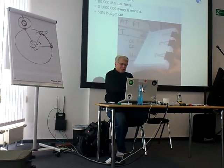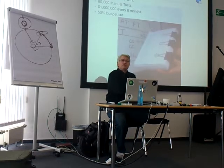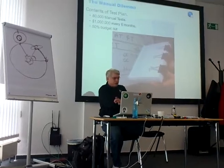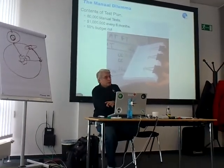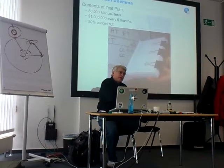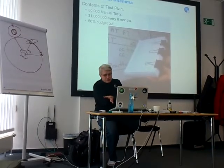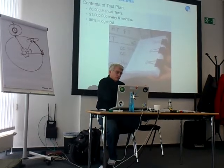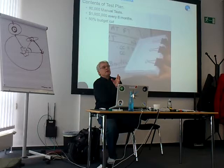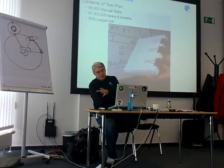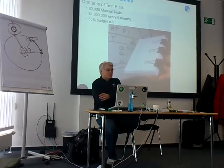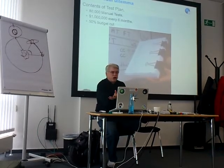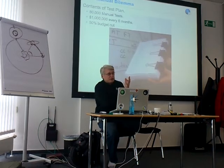Why did we write the manual tests? Because we thought they were cheap. Programmers are expensive; testers are cheap. This is somewhat true — programmers generally have a higher salary than testers. On the other hand, programmers do things once. Testers do them over and over and over, so the cost builds up enormously. This is not rocket science. We should have known this all along, but we started manual testing anyway.